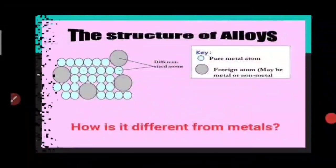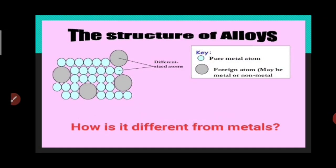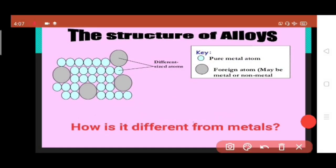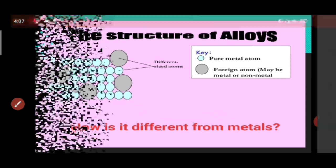Now let's see the structure of alloys. Here is the diagram of an alloy. In this diagram, you can see same sized blue particles. They are the atoms of a pure metal, and the different or the big sized particles are the atoms of the foreign particles, and it may be a metal or non-metal. Then how is it different from metals? Let's see it.